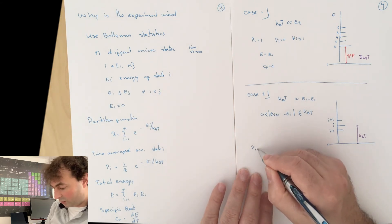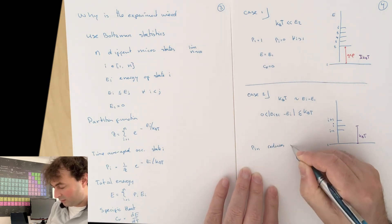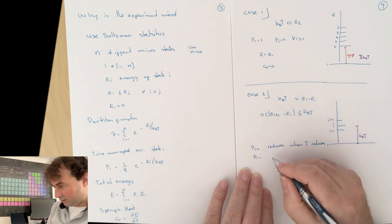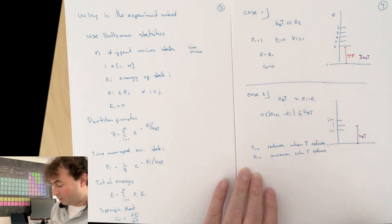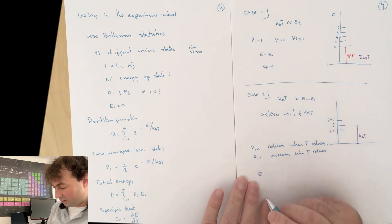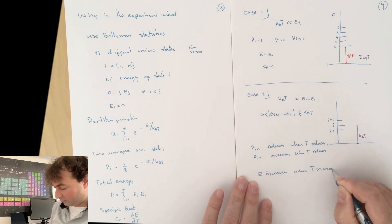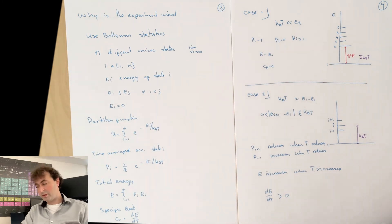Now we can calculate the change in occupation of PI plus 1. When we reduce the temperature, this state is going to reduce in occupation. So PI plus 1 reduces when T reduces. And PI minus 1 increases when T reduces. So when you cool down, you start to populate more and more the lower energy states. If you do this, you'll find that the energy increases when T increases. Or in other words, dE over dT is larger than zero.